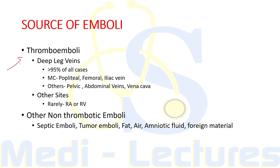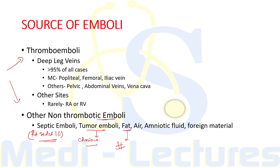Non-thrombotic emboli can also cause pulmonary embolism. These include septic emboli from right-sided infective endocarditis, tumor emboli especially in choriocarcinoma, fat emboli seen in fracture of large bones, air emboli, amniotic fluid emboli, and foreign material during IV drug use.